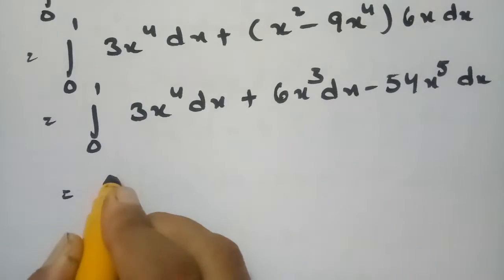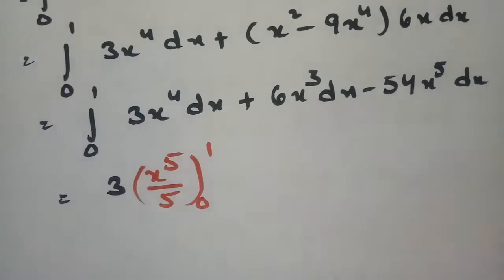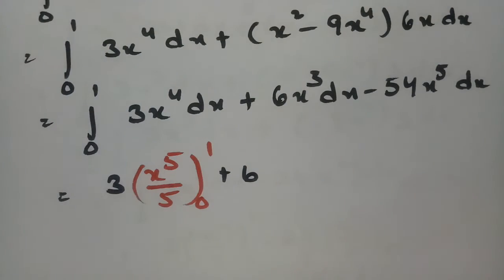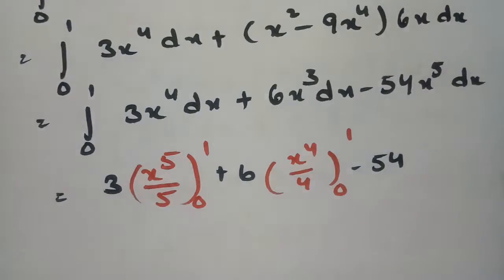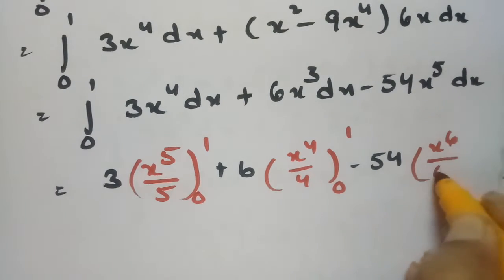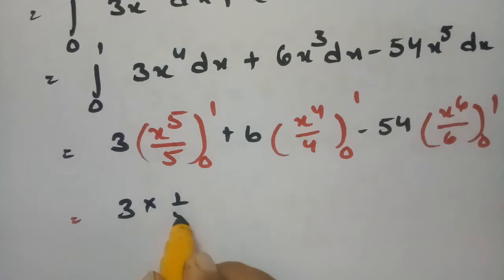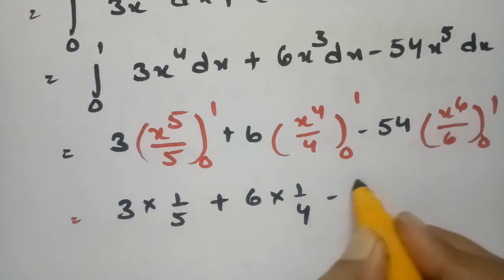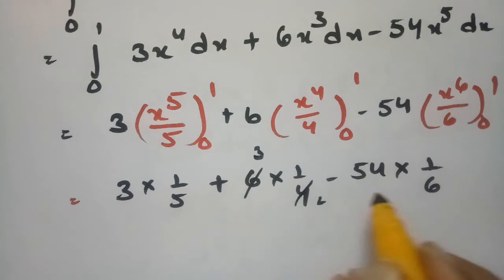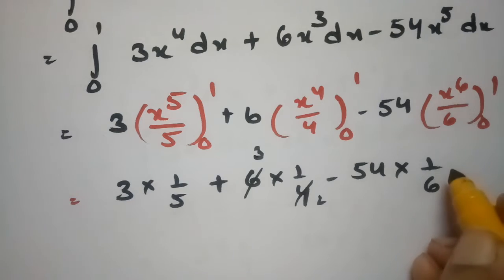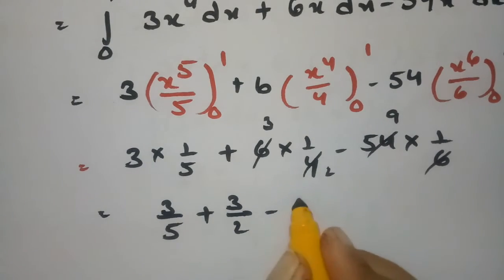Integrating with respect to x: 3 times x⁵/5 plus 6 times x⁴/4 minus 54 times x⁶/6, evaluated between 0 and 1. Substituting the limits: 3 times 1/5 plus 6 times 1/4 minus 54 times 1/6. After cancellation, this becomes 3/5 plus 3/2 minus 9.